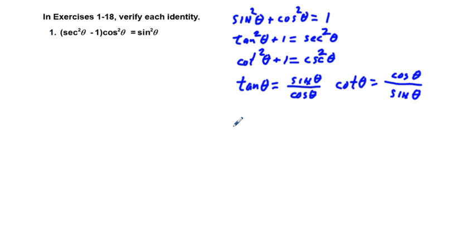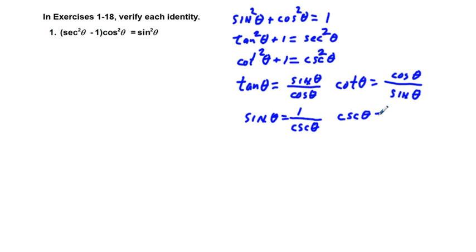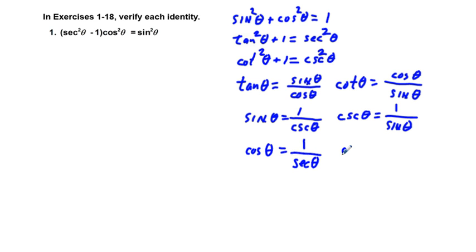And then we have our reciprocal identities, which are sine theta equals 1 over cosecant theta, cosine theta equals 1 over secant theta, and secant theta is equal to 1 over cosine theta.